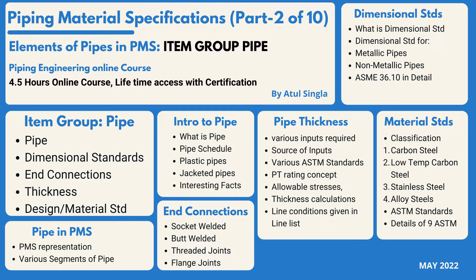So let us see what we are going to cover in this part. The main agenda here is the item group 'Pipe.' We are going to divide this section into five parts: first, pipe; second, dimensional standard; third, end connection; fourth, thickness; and fifth, the design and material standards.